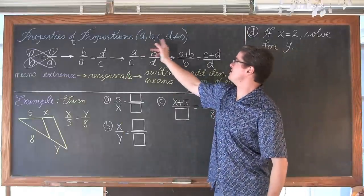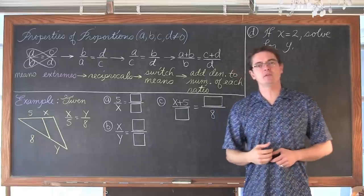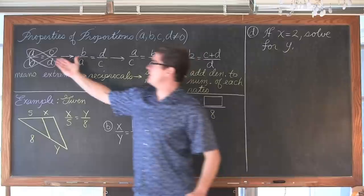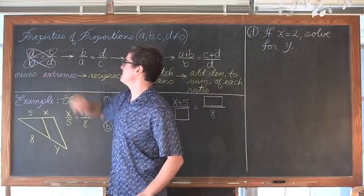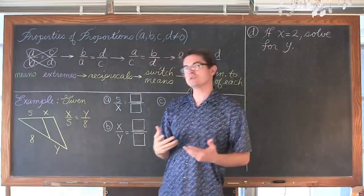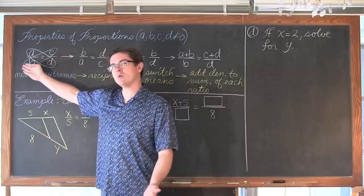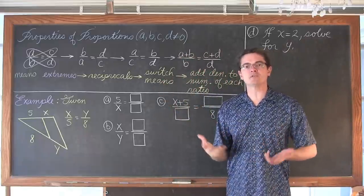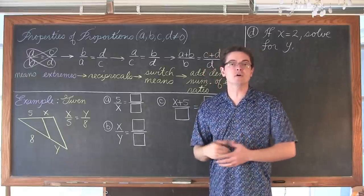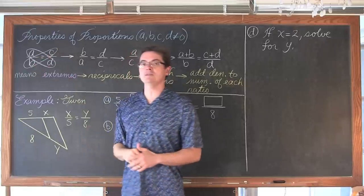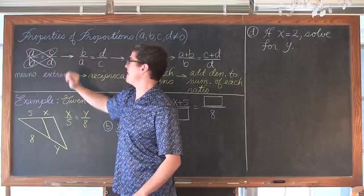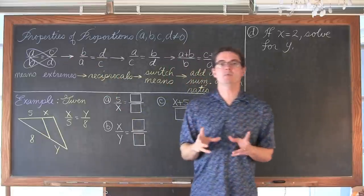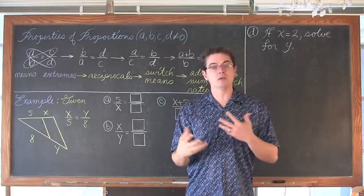Now, assuming that a, b, c, and d are none of them equal to zero, I want to show you how much flexibility you have when setting up proportions and still get the correct answer. We have our initial given ratio: a to b equals c to d. When you have these equal ratios set up as fractions, going from the lower left to the upper right, those two numbers are called the means. Going from the upper left to the lower right, those values are considered the extremes.